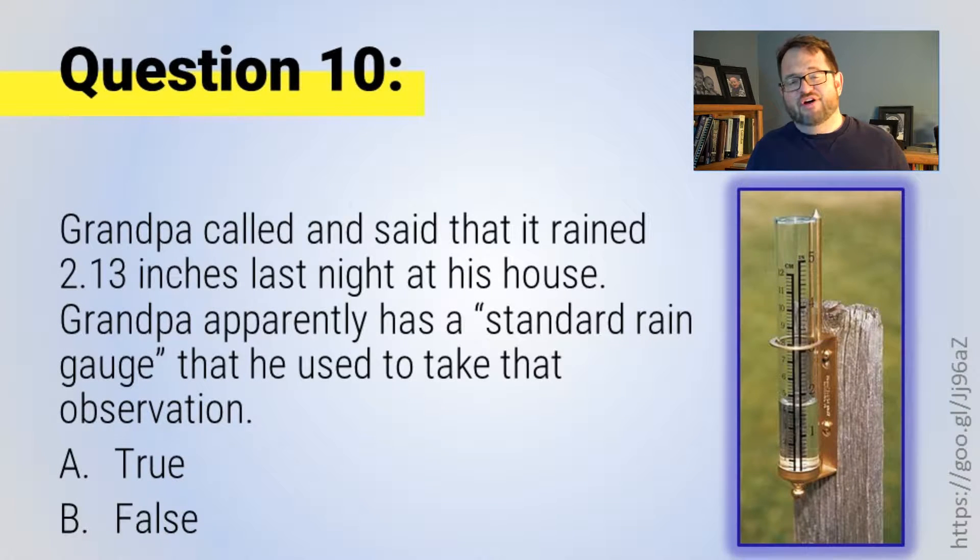I might have been too clever on this question. The right answer is false. There's no way he could possibly have gotten an observation with that much precision - 2.13 inches, to a hundredth of an inch - from his little standard rain gauge right there.